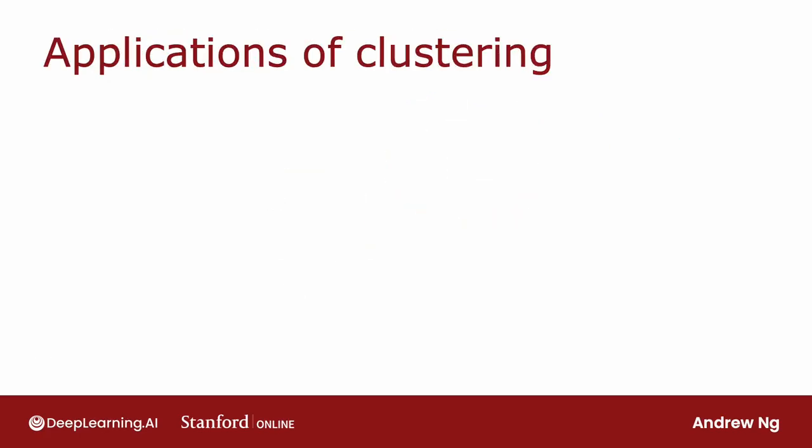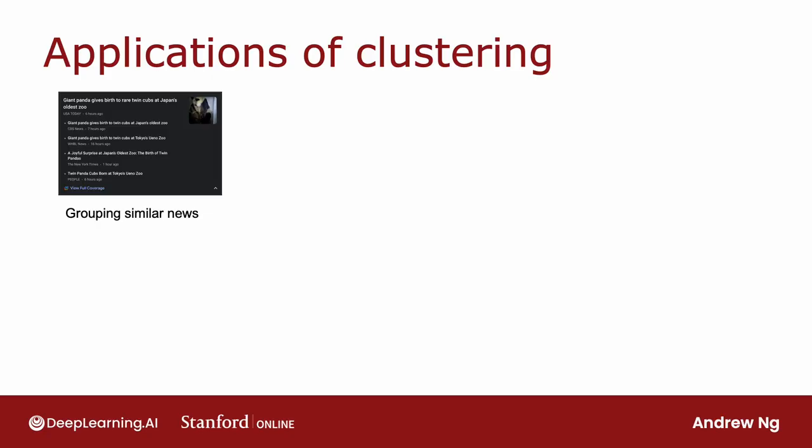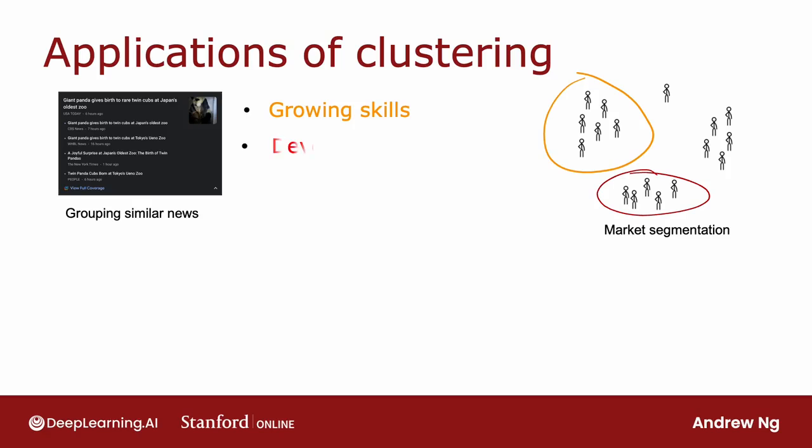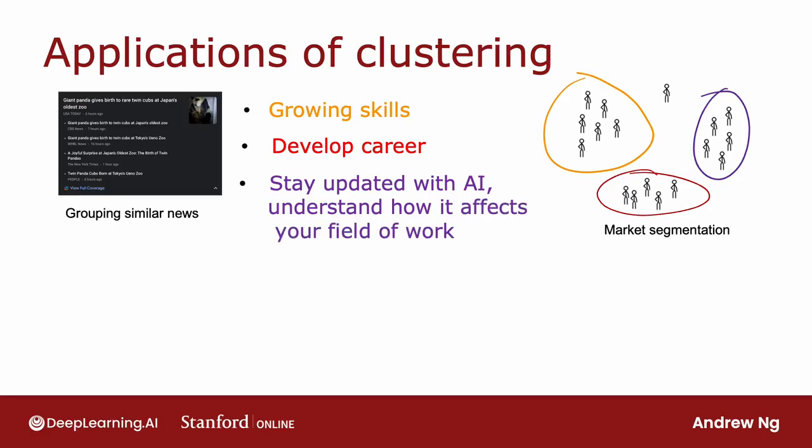Here are some applications of clustering. In the first week of the first course, you heard me talk about grouping similar news articles together, like the story about pandas, or market segmentation, where at deeplearning.ai we discovered that there are many learners that come here because you may want to grow your skills, or develop your careers, or stay updated with AI and understand how it affects your field of work. And we want to help everyone with any of these goals to learn about machine learning. Or if you don't fall into one of these clusters, that's totally fine too. And I hope deeplearning.ai and Stanford Online's materials will be useful to you as well.